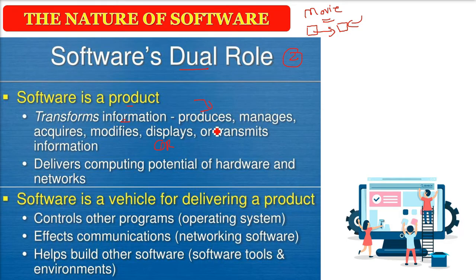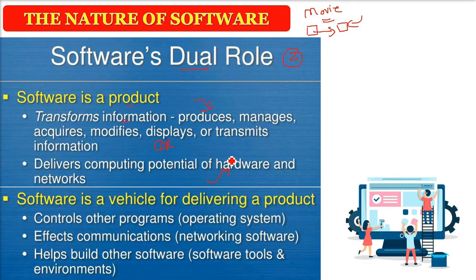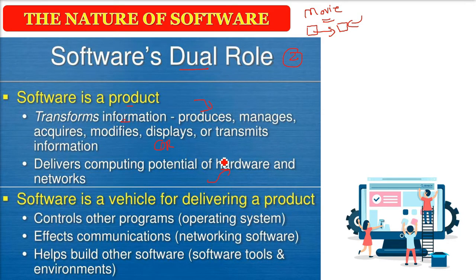This is the first role of software. It is delivering the computing potential of hardware and networks. Software can be very light, or it can be computationally very expensive. It is a product made for a certain machine on which it should work.